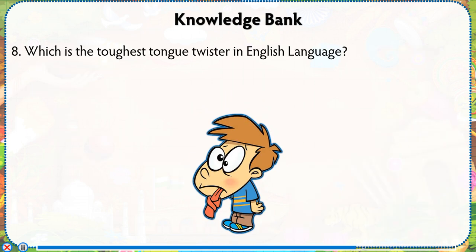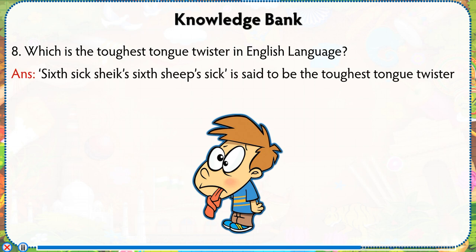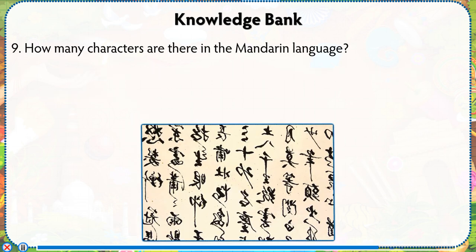Which is the toughest tongue twister in the English language? Answer: 'Sixth sick sheik's sixth sheep's sick' is said to be the toughest tongue twister in the English language.